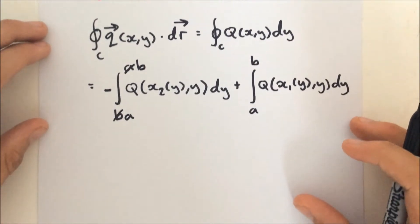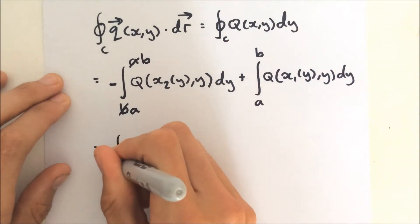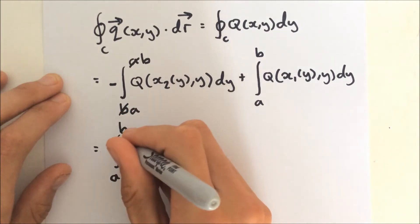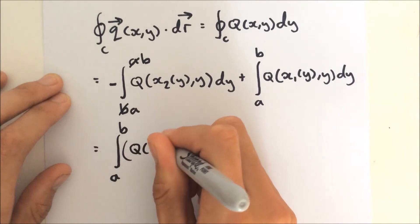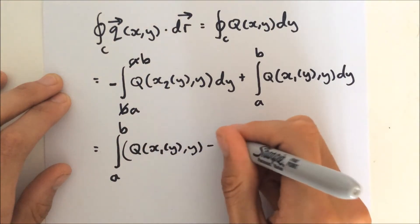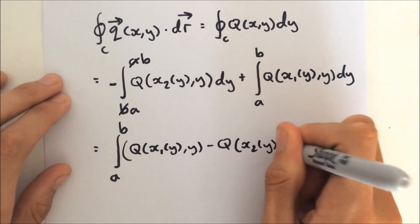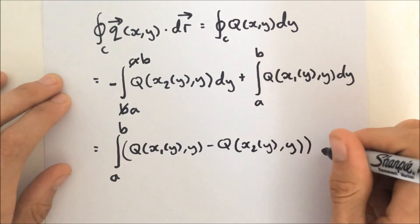So our line integral then becomes the integral from A to B of Q, x1 of y, y, and then we minus Q, x2, and dy.